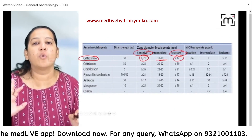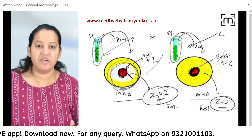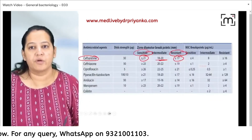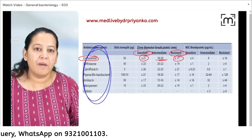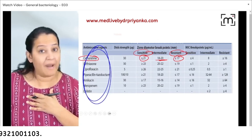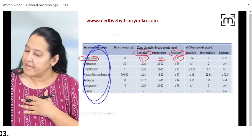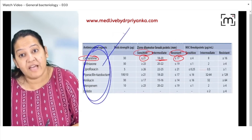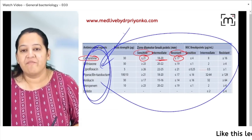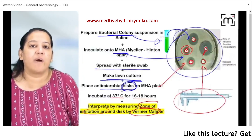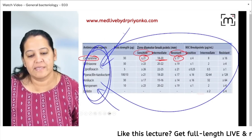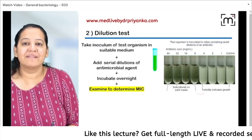Don't give an intermediate antibiotic to your patient — try to give a susceptible one. If all of them are resistant, then you can go with the intermediate one. Being a microbiologist, I will generate my report like this. I have applied all these antibiotics in my laboratory — this is the report showing which antibiotic is susceptible and which is resistant. Based on my report, you the clinician decide which antibiotic is best for your patient. It is not my call as a microbiologist; it is the clinician's call.